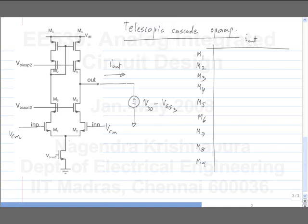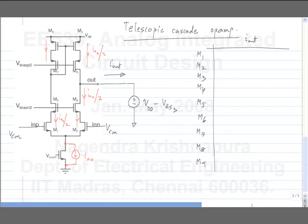First, let me add a noise current to M0. What will be the output current because of this? It just splits equally into IM0/2 on each side, and from here it gets mirrored to the other side. The common mode input — anything connected to the tail current — appears in the common mode and will not appear in the final output. So the contribution of M0 is zero.